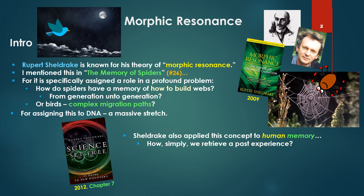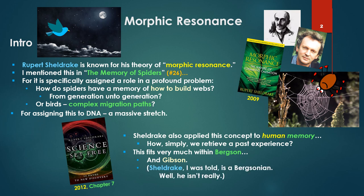Rupert also applied this concept of Morphic Resonance to human memory in Science Set Free — how simply we as humans retrieve a past experience. This fits very much within Bergson and Gibson. I was told by a reviewer for an article I'm publishing that Sheldrake is a Bergsonian, which caused me to look into this a bit more, but I see he isn't really all that much of a Bergsonian. He resonates to him, but isn't quite, as we'll see. And we can take this a bit further than Rupert can.